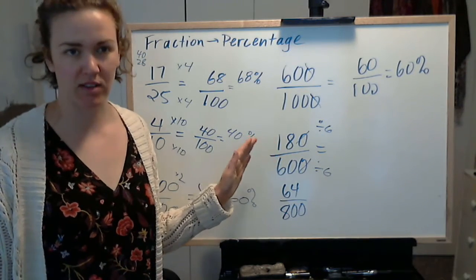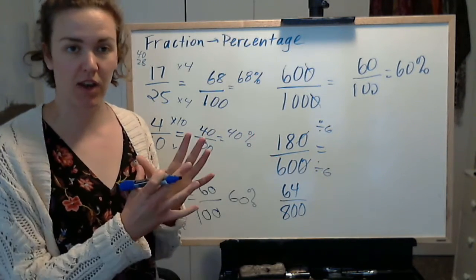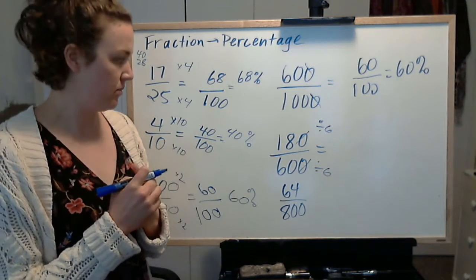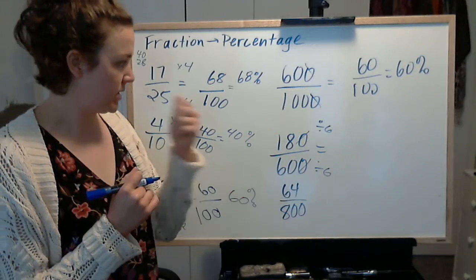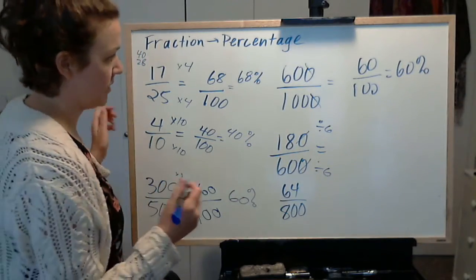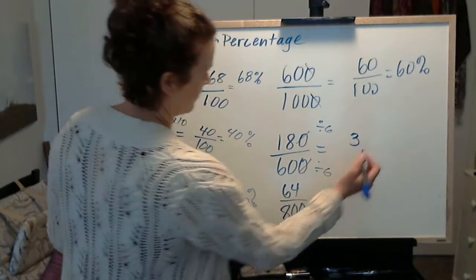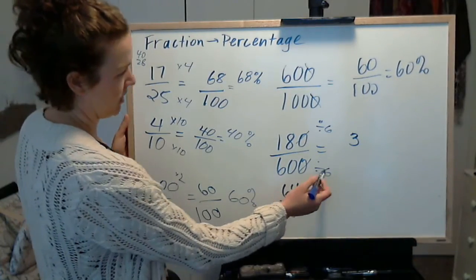Sometimes you just have to trust and try to step out and see if it gets to a fraction where you can see what to do. And that's what I'm doing right now. So 18 divided by 6 is 3. 60 divided by 6 is 10.